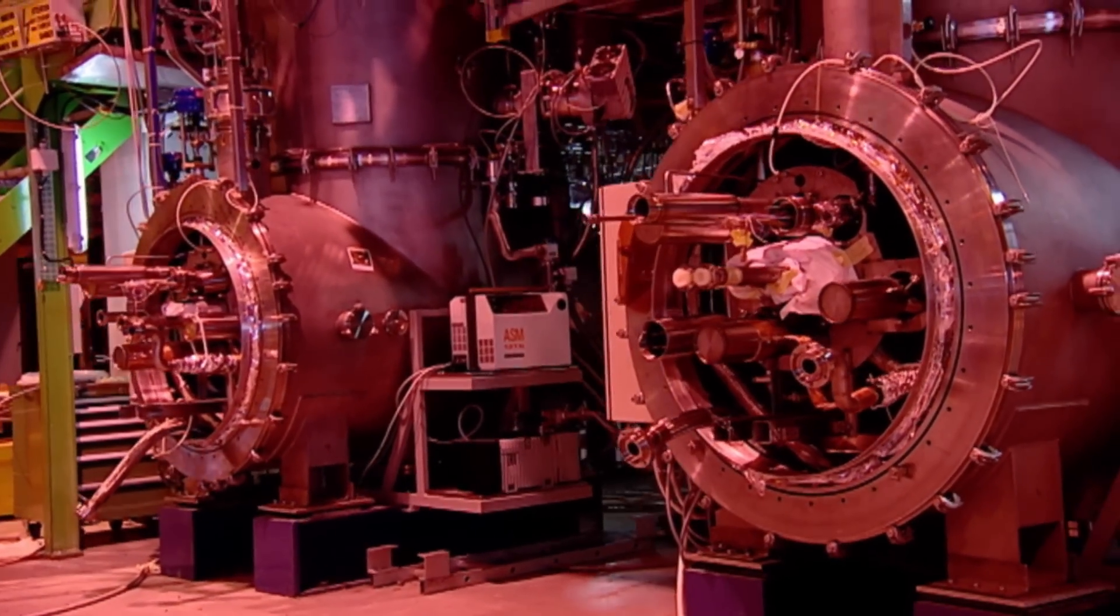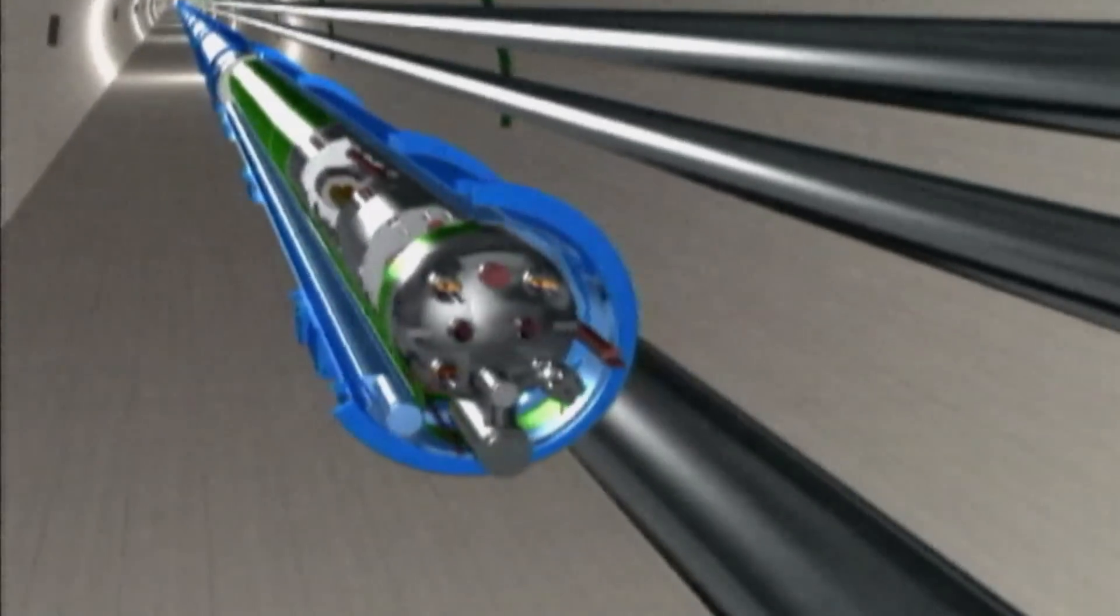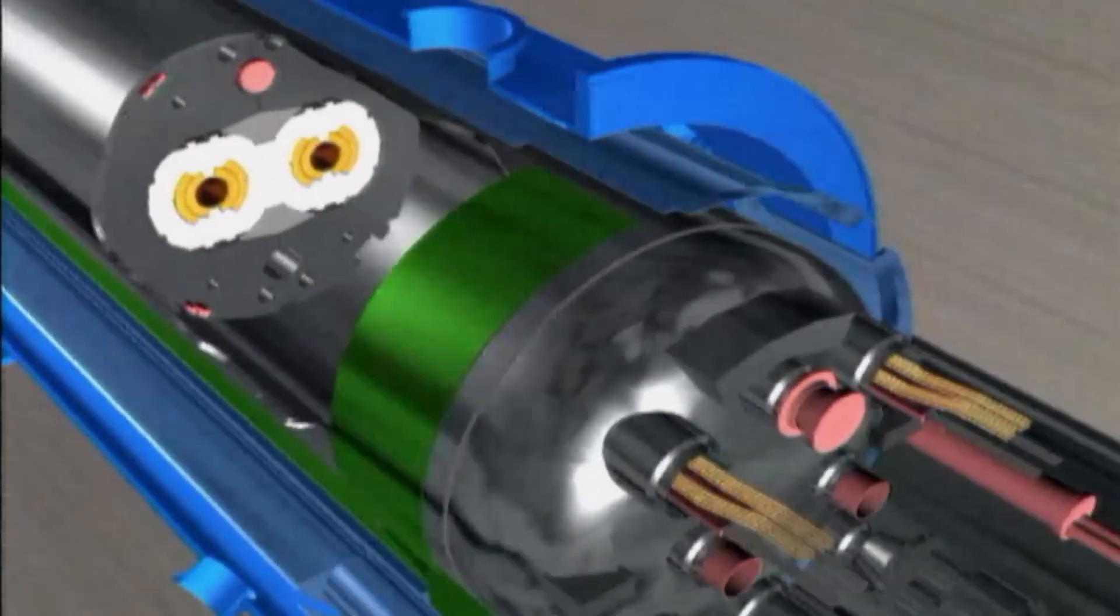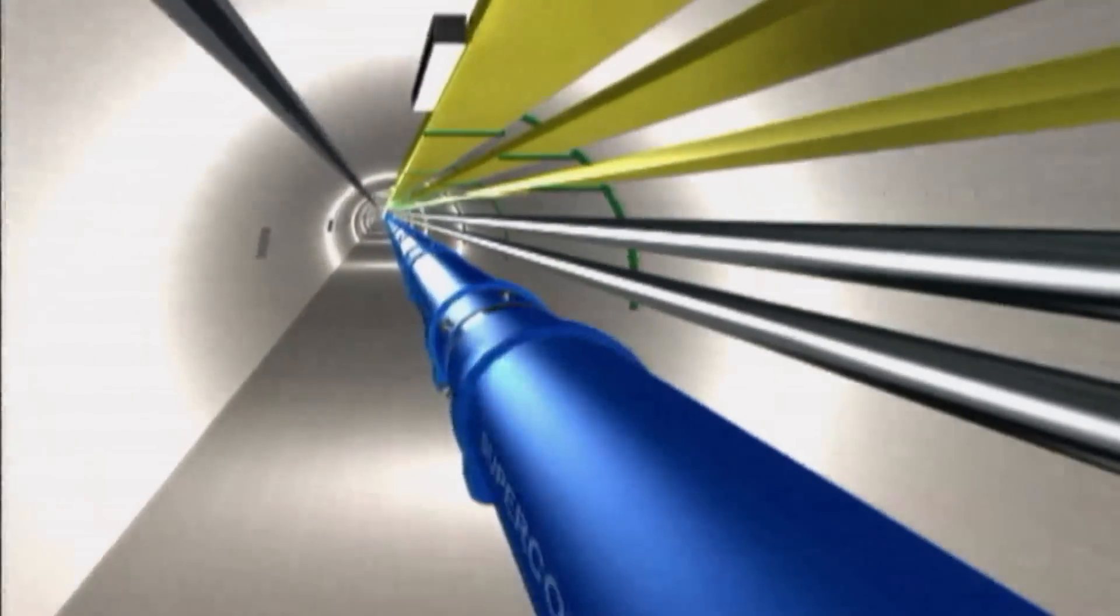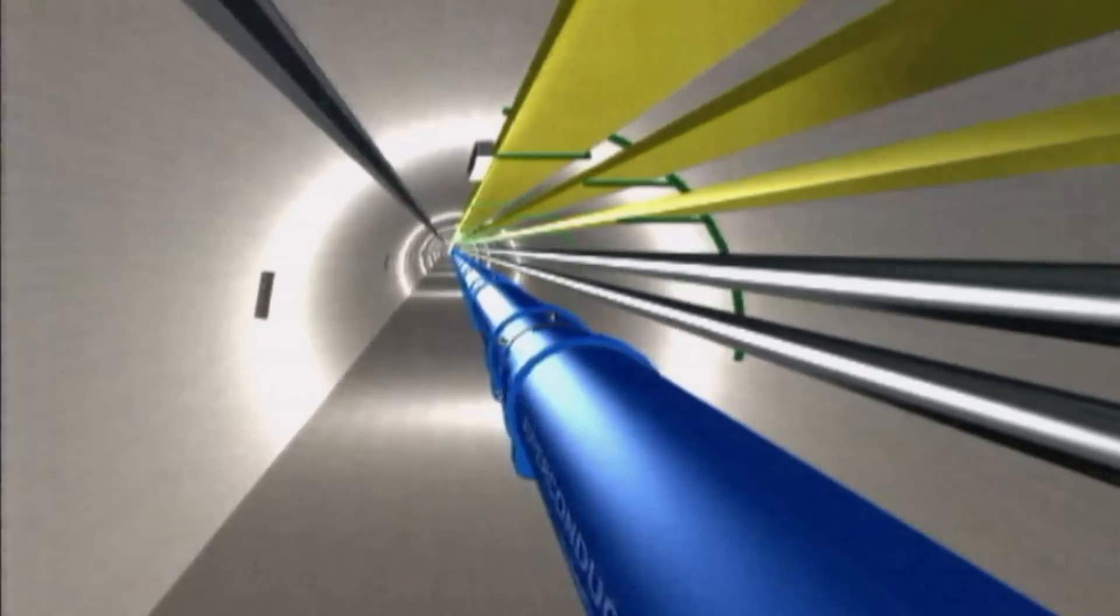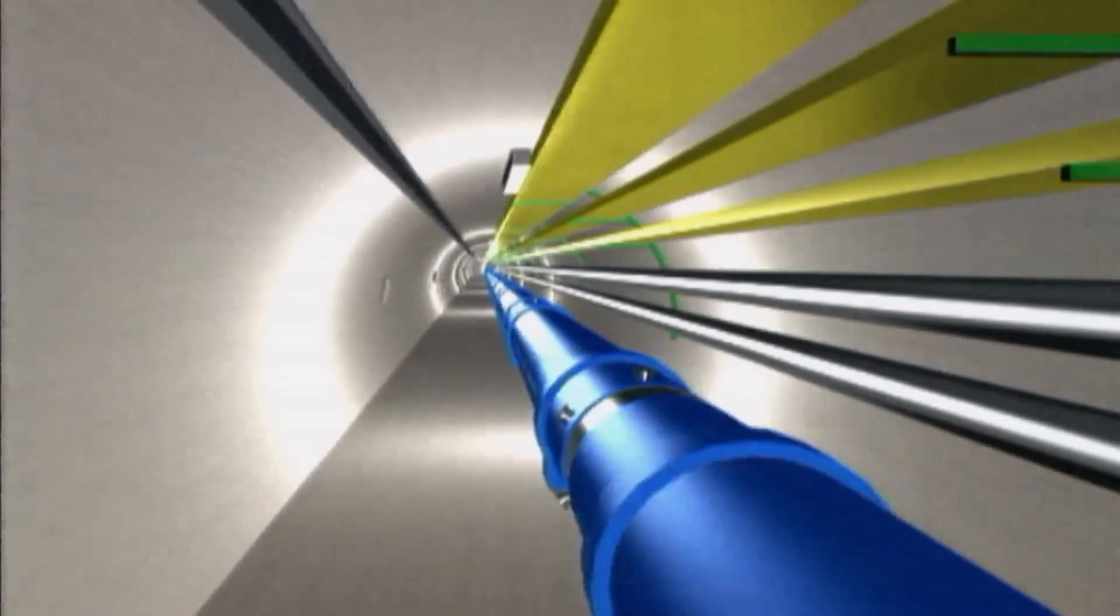Basically, a particle accelerator is a vacuum tube surrounded by electromagnetic devices. Theoretically, it's simple enough. Imagine a proton moving through a tube at a speed of 300,000 kilometers per second.